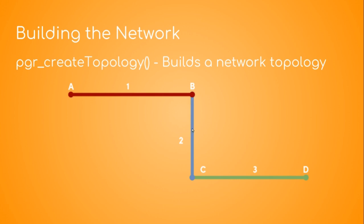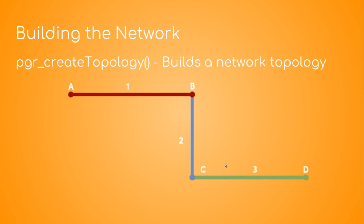Segment one will have the starting point A and the ending point B. Segment two will have the starting point B and the ending point C. Segment three will have the starting point C and the ending point D. This makes our line data topologically aware of each segment, so that when you are getting directions from point A to point D you are able to connect all these segments together to get the correct shortest distance. That's what pgr_create_topology does — it gives you a table with each segment having a starting point and an endpoint.